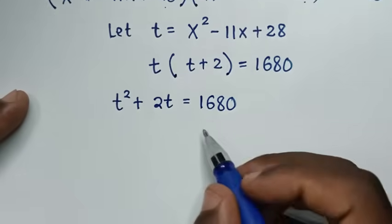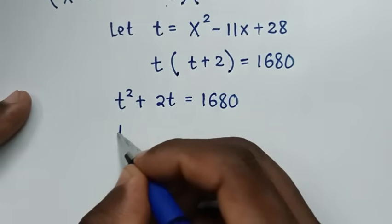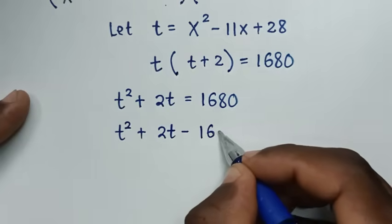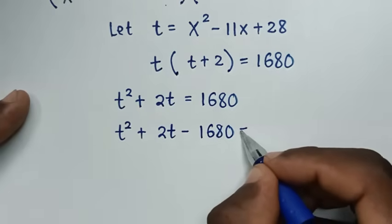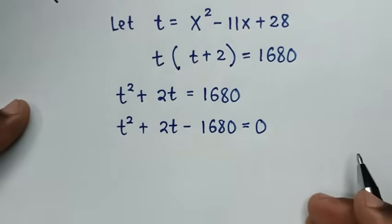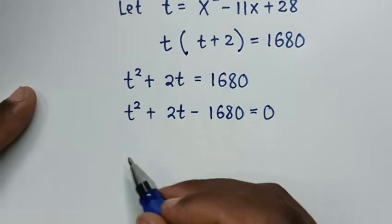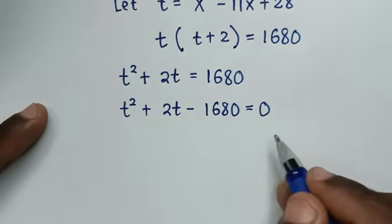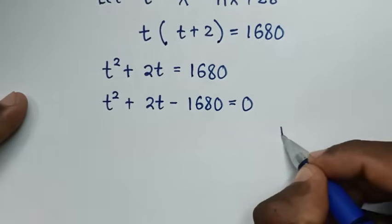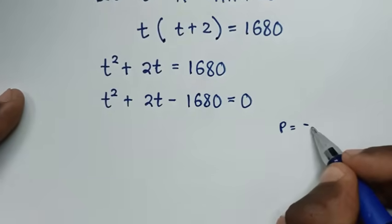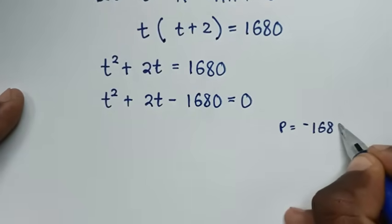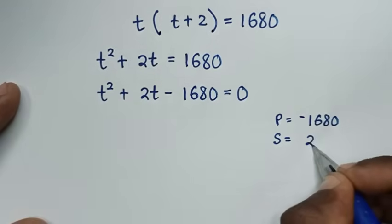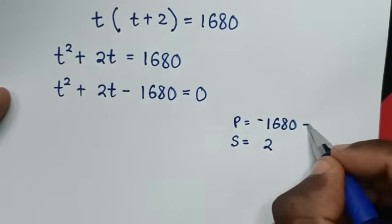Expanding: t squared plus 2t equals 1680. Moving 1680 to the other side gives t squared plus 2t minus 1680 equals 0. This quadratic in t can be solved by grouping and factorization. The product is negative 1680 and the sum is 2.